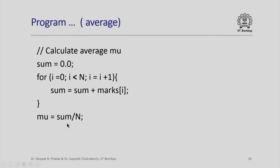This is what I meant earlier when I said if sum and n are both integers, I will lose the fractional part. Since we have declared sum to be a floating point variable, n will be converted - the value of n will be converted to a floating point value - and I will get the correct average mu.